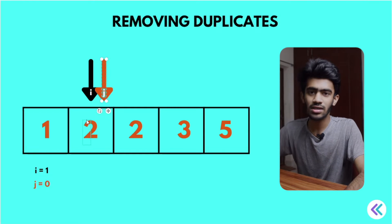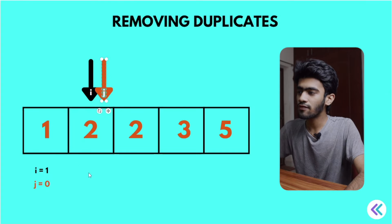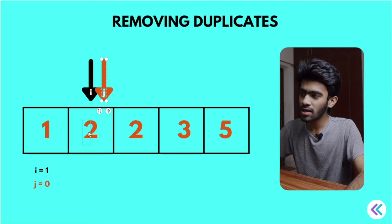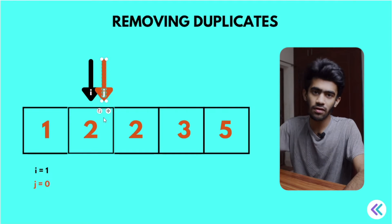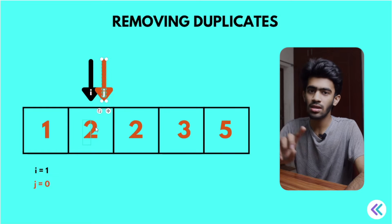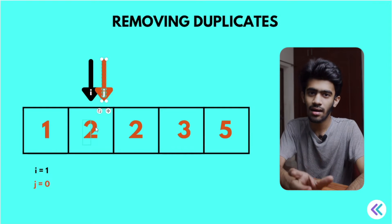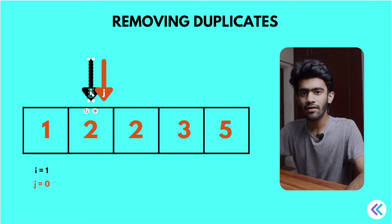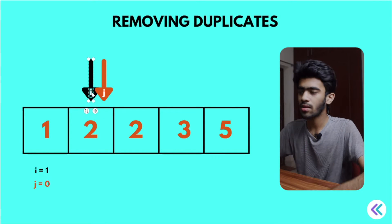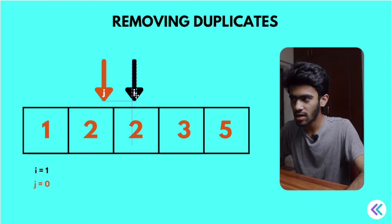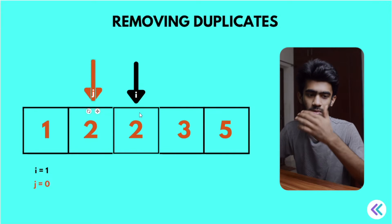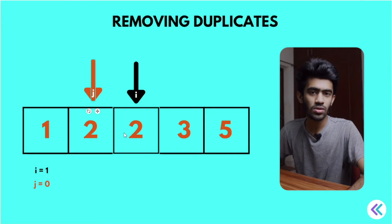Now we increment. a of j is equal to a of i. In this case, i and j, we have a pointer in this position, we substitute the 2 value. So in this position that statement has no meaning. That means i value over iteration followed by increment, so i value increment and j value remains the same. So j pointer, i pointer - now 2 and 2 is the same.